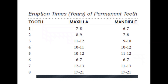It takes approximately 10 years from the start of calcification to root completion, except for canines which take generally 14 years. A tooth erupts through bone when approximately two-thirds of the root has formed, and erupts through the gingiva with three-fourths of the root formed. The interval between crown calcification and full root completion is approximately 5 years, and root completion occurs approximately 3 years after eruption.